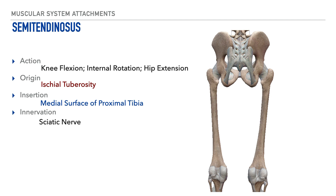The next muscle of the hamstrings is the semitendinosus, which is directly in line with and next to the long head of the biceps femoris. The action produced by this muscle is knee flexion and internal rotation; it also helps to perform hip extension. Its origin is on the ischial tuberosity, its insertion is on the medial surface of the proximal tibia just below the semimembranosus insertion, and its innervation is the sciatic nerve.